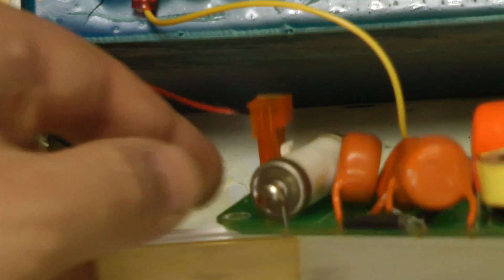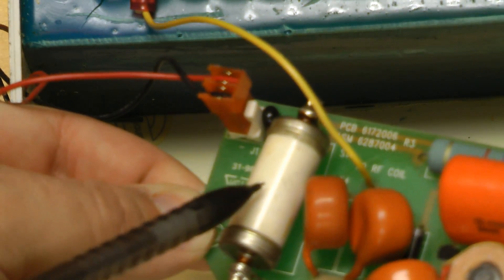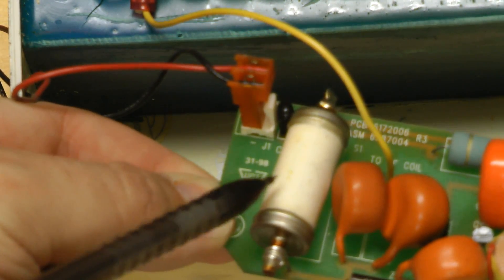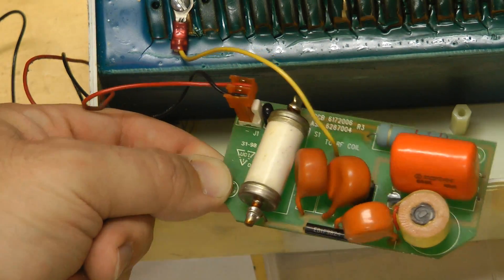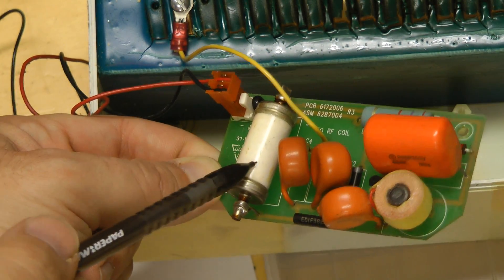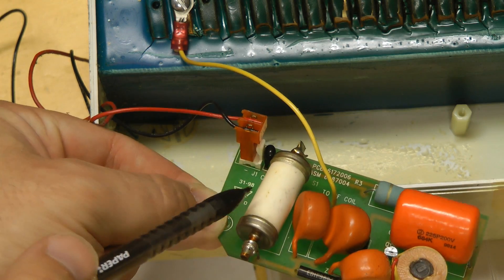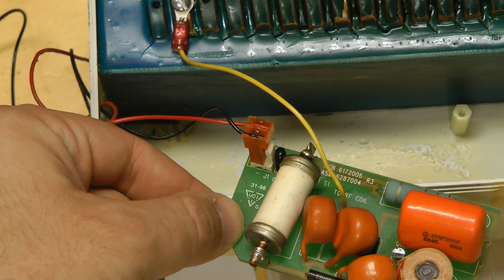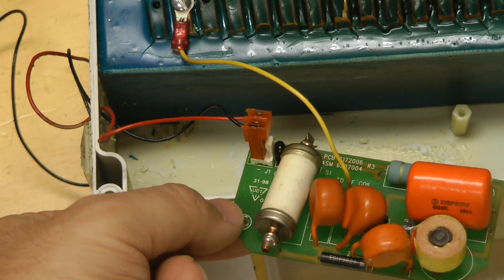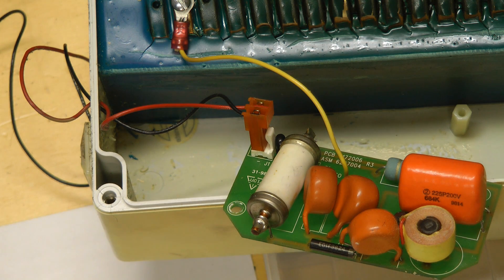I notice there is the number 8.3 scribbled onto the side. It's hard to see, but there's a very faint 8.3 scribbled on it, so I'm figuring that may be the intended firing voltage in kilovolts. It seems about right for a circuit using 15 kilovolt capacitors.